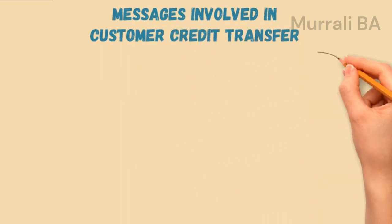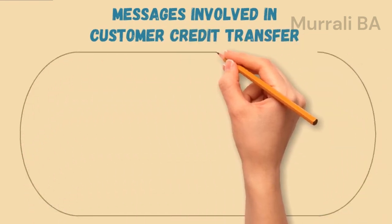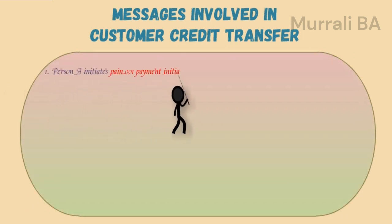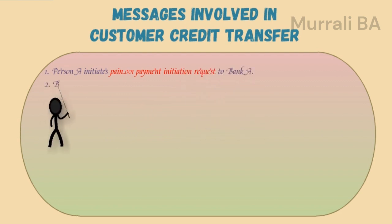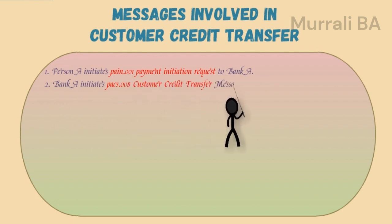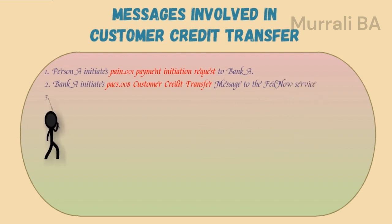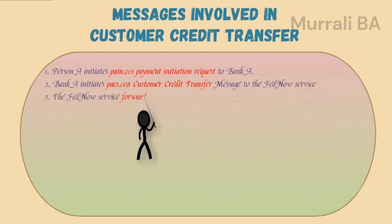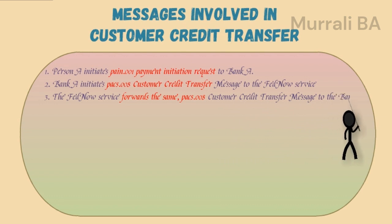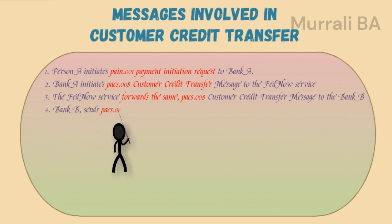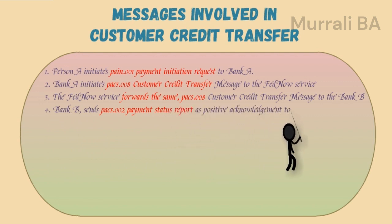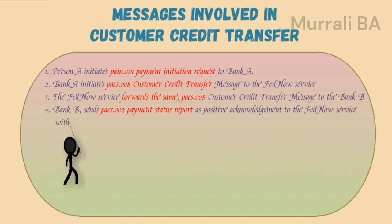Now let's see the messages involved in the payment flow. Number one, person A initiates a PAIN.001 payment initiation request to bank A. Number two, bank A initiates a PACS.008 customer credit transfer message to the FedNow Service. Number three, the FedNow Service forwards the same PACS.008 customer credit transfer message to bank B. Then bank B sends a PACS.002 payment status report as a positive acknowledgement to the FedNow Service with the status code ACTC, which means accepted technical confirmation.